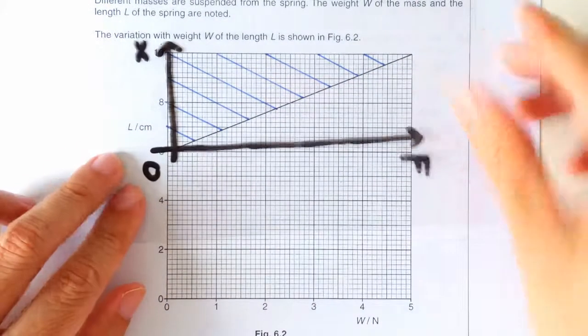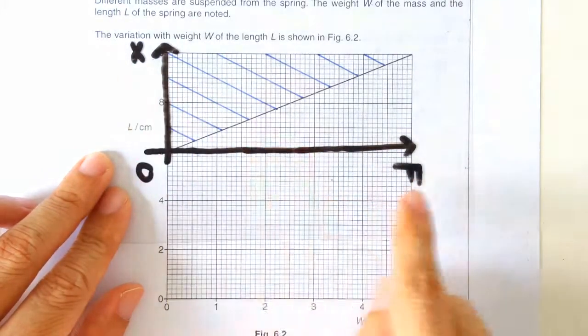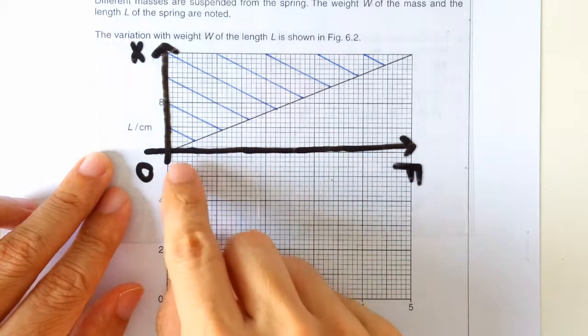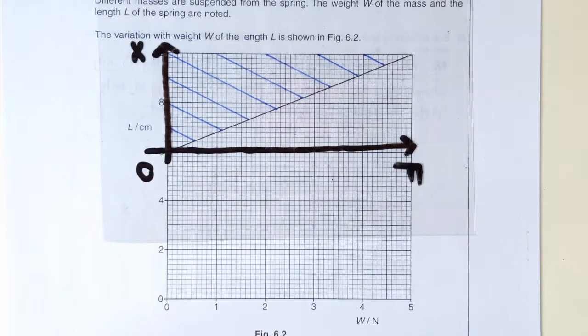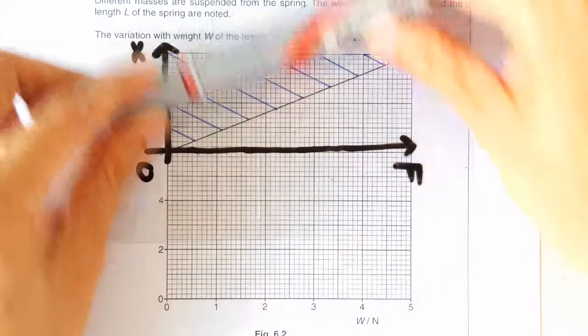So basically, we have swapped the f and the x axis. And secondly, our extension only starts from here. That's why the area under the graph is this area here.